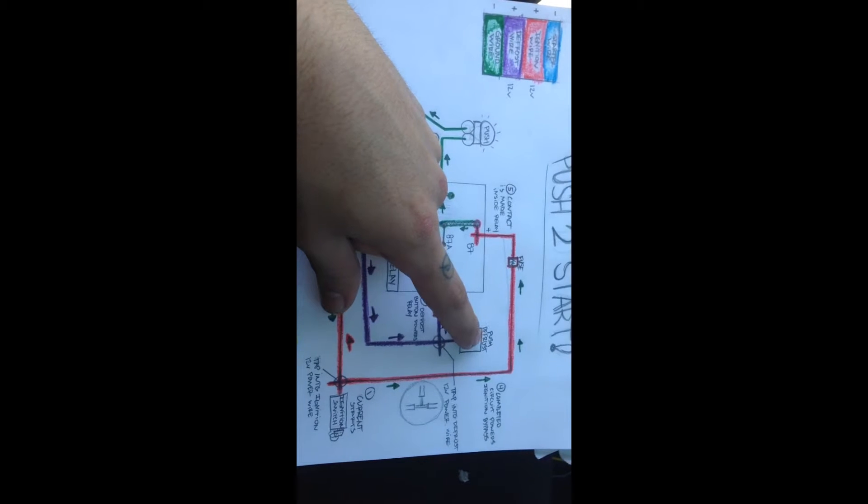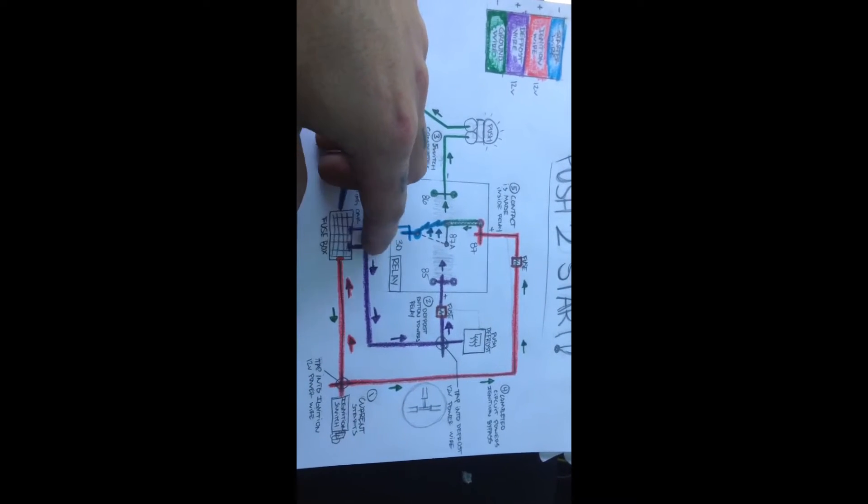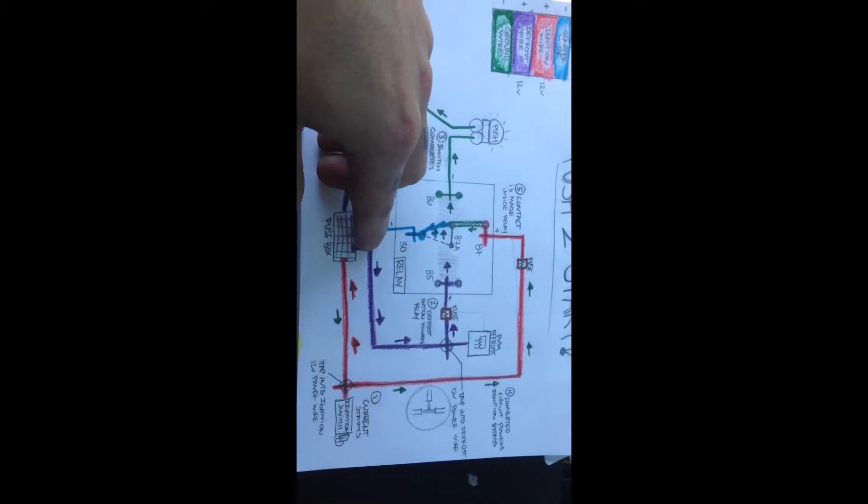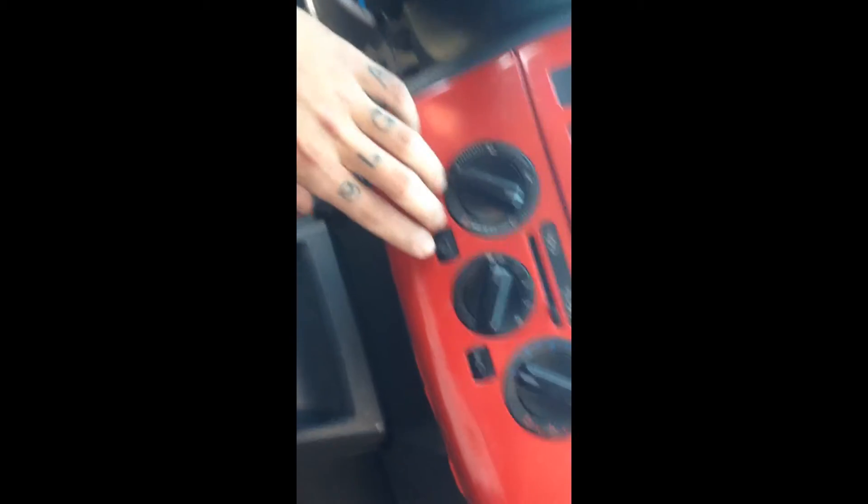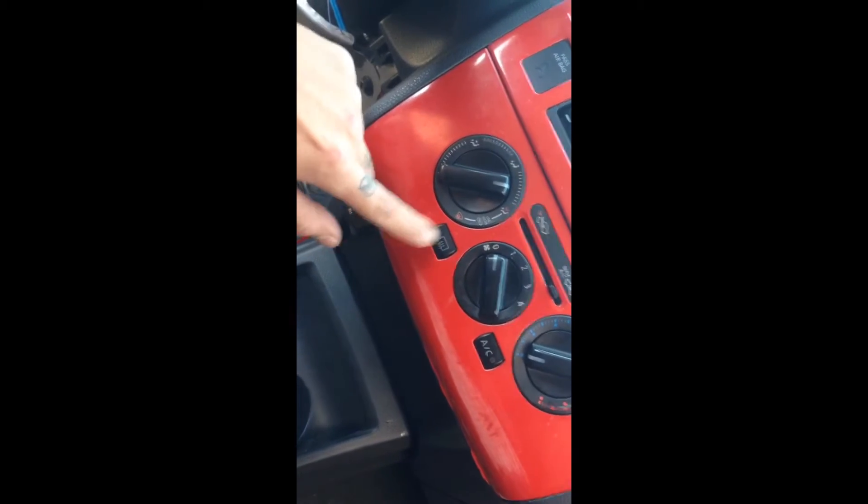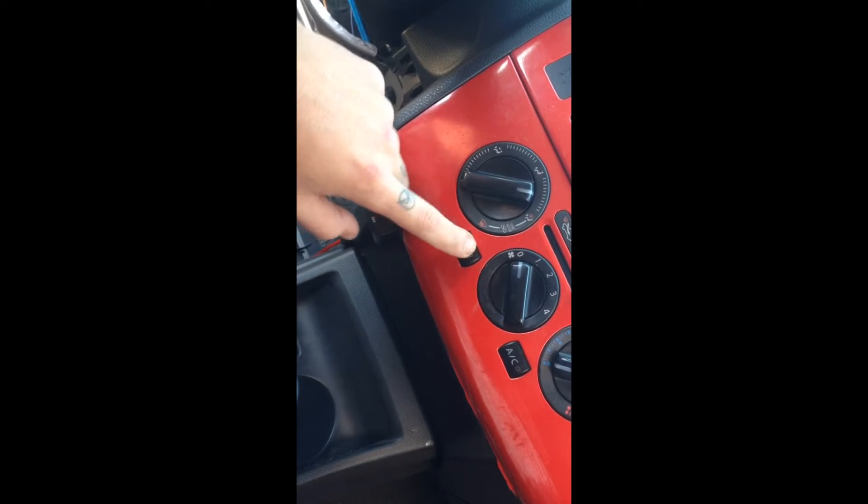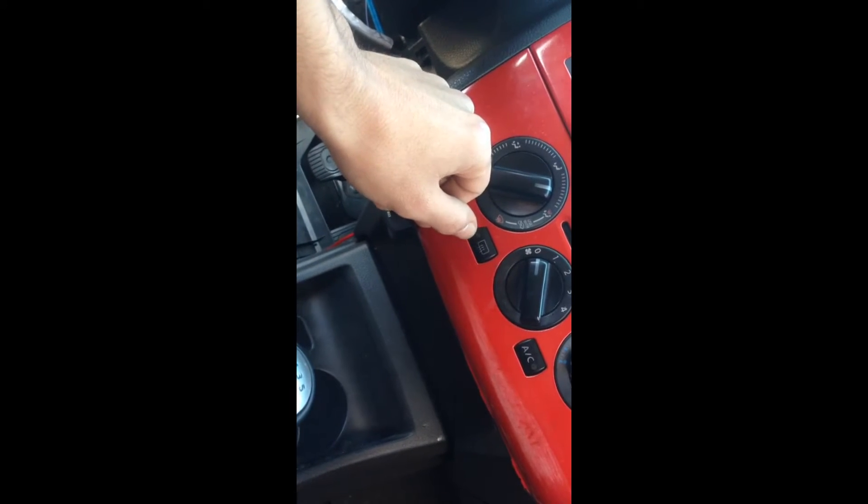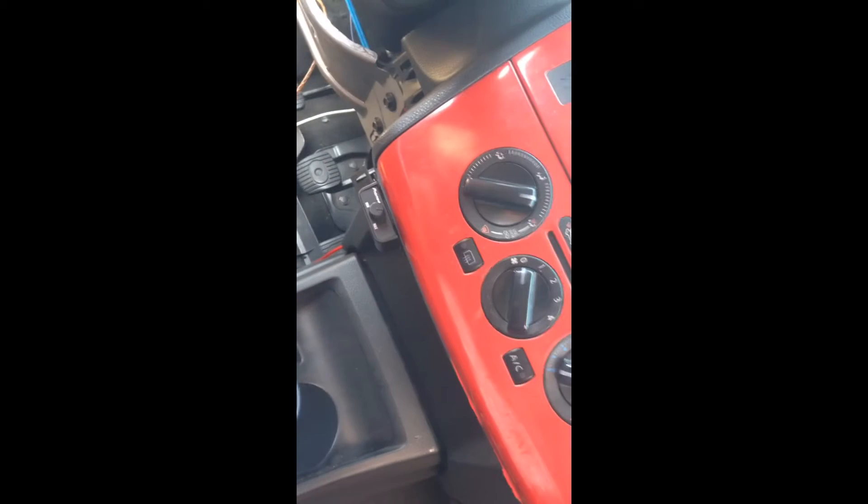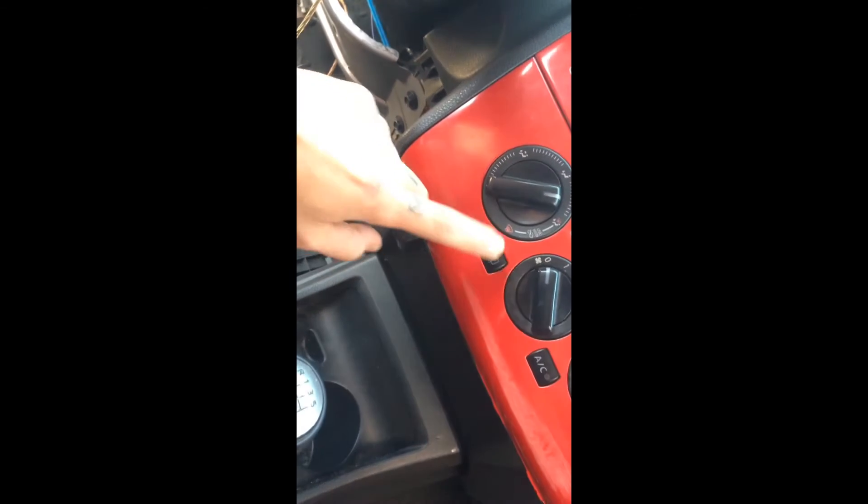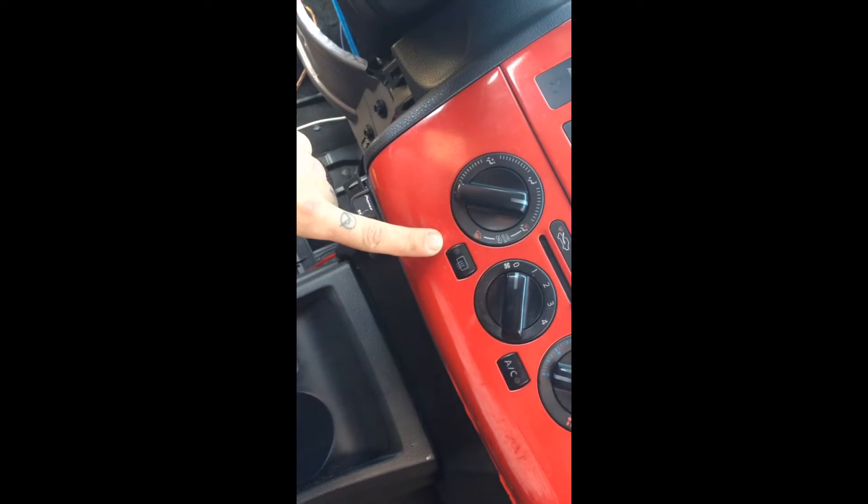And after you have power, you want to go and look for your defrost button wire. If you don't know which one it is, if you don't have your car's manual or anything, the way to do that is you open this up, get behind your button, ground out your voltmeter, test each wire behind there, see which one gives you 12 volts when this button is on, and see which one gives you no voltage when this button is off.